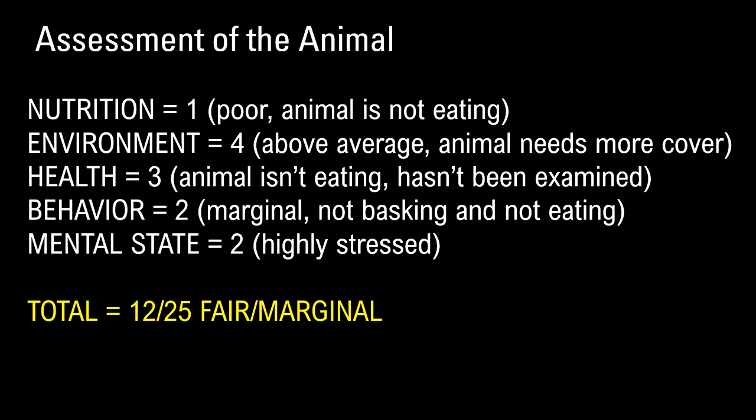There's usually a portion under the numerical rating of the welfare assessment where you note why a score is low. In our assessments, if it's three or lower, I have keepers note why — specifically so that lower scores are contextualized. People usually don't say it's a one and then have nothing additional to say about it.